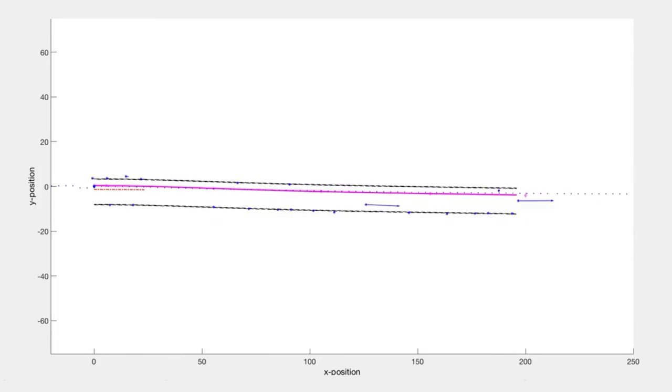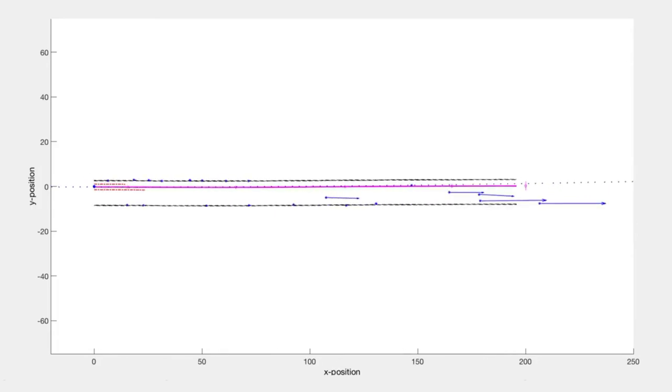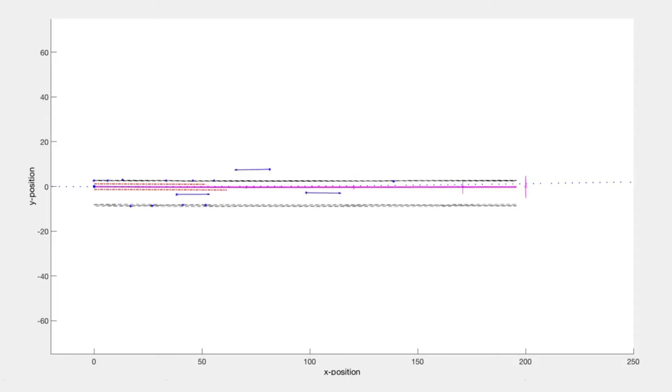Here we see that we are able to fairly accurately describe the shape of the road at also far distances, by including information about the direction in which the leading vehicles are traveling, and the shape of the detected guardrails.